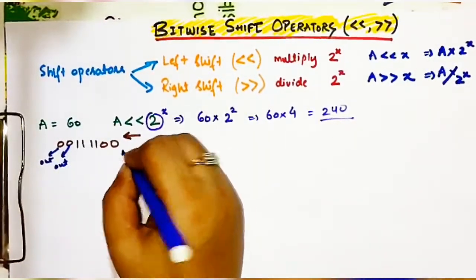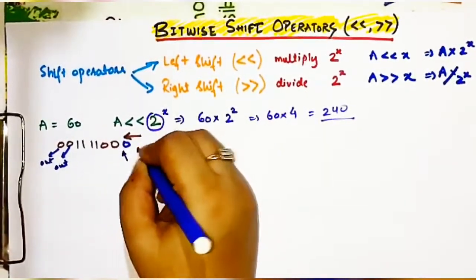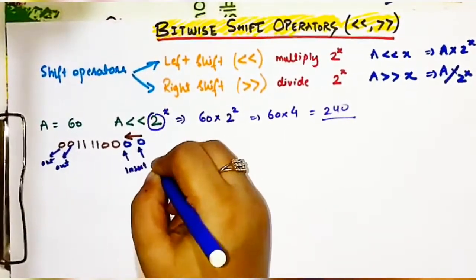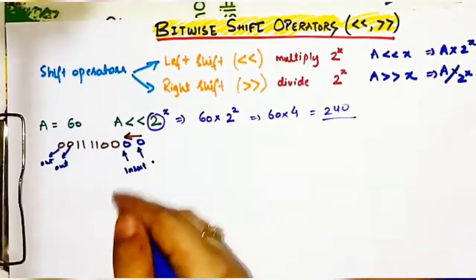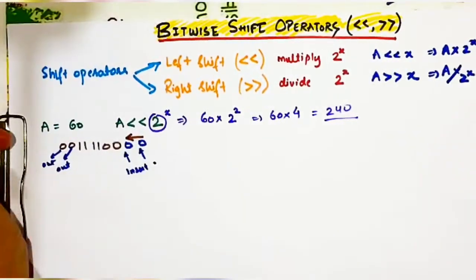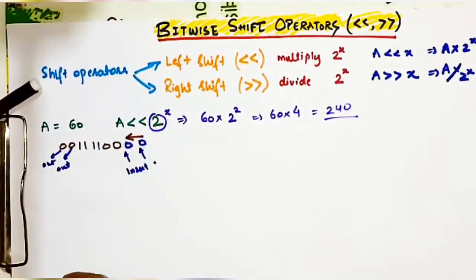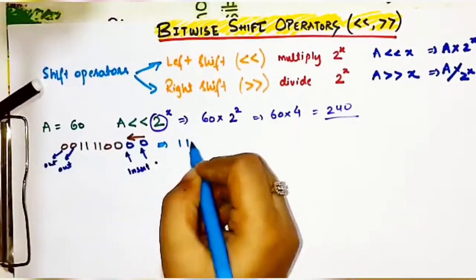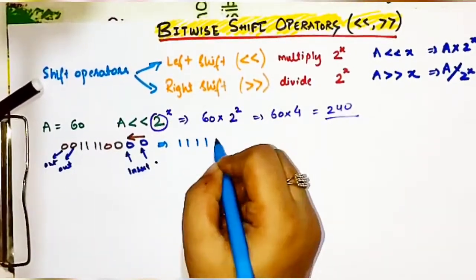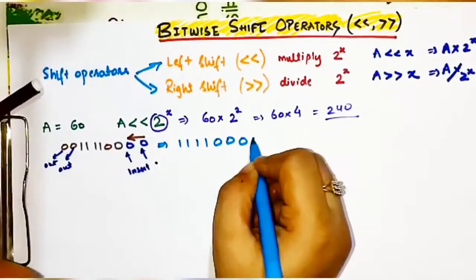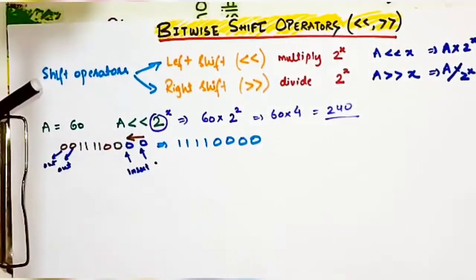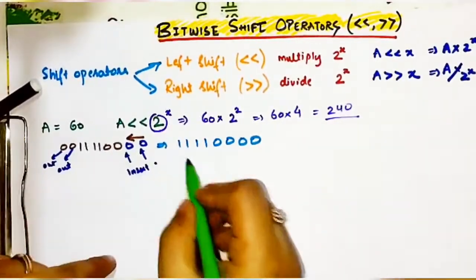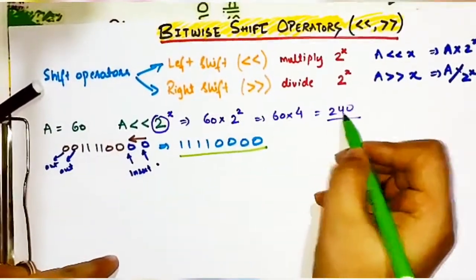As two digits are getting shifted out from the left side, we need to append two zeros on the right side. So the resultant binary number after shifting by two will be 11110000.